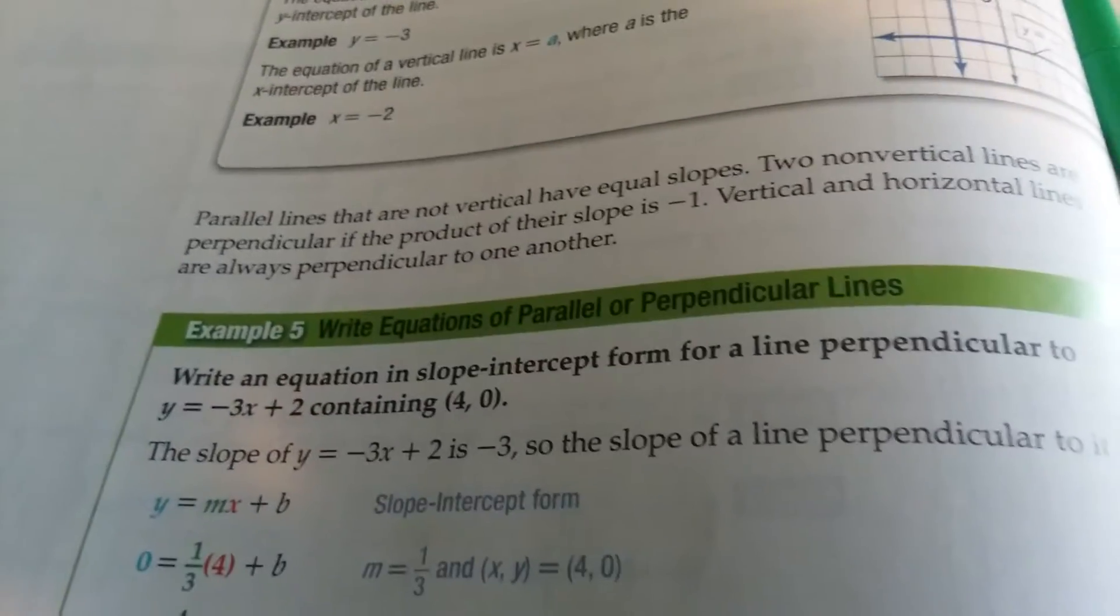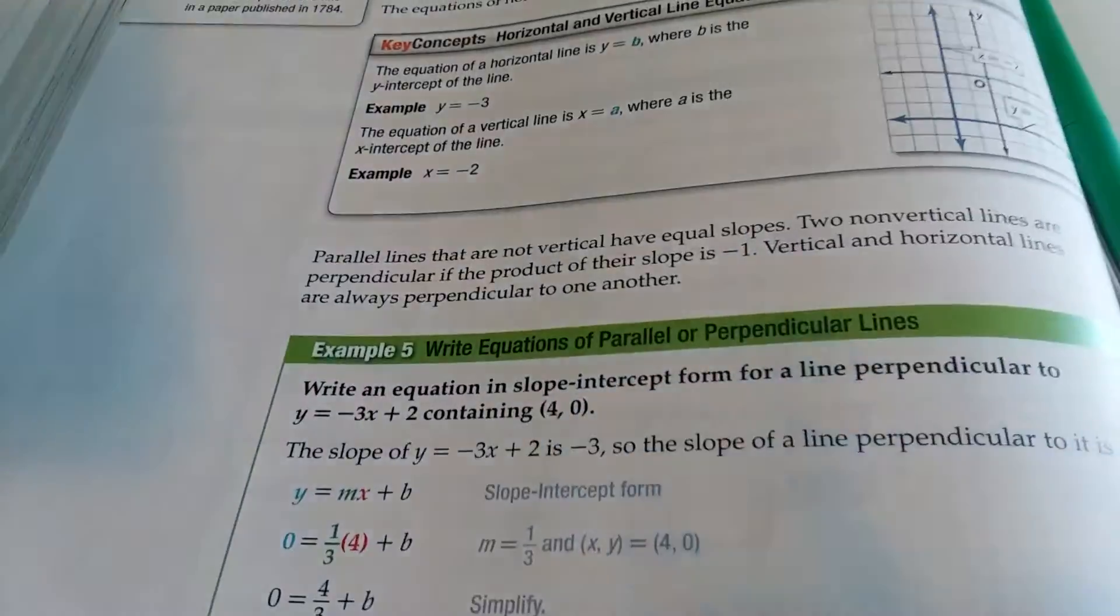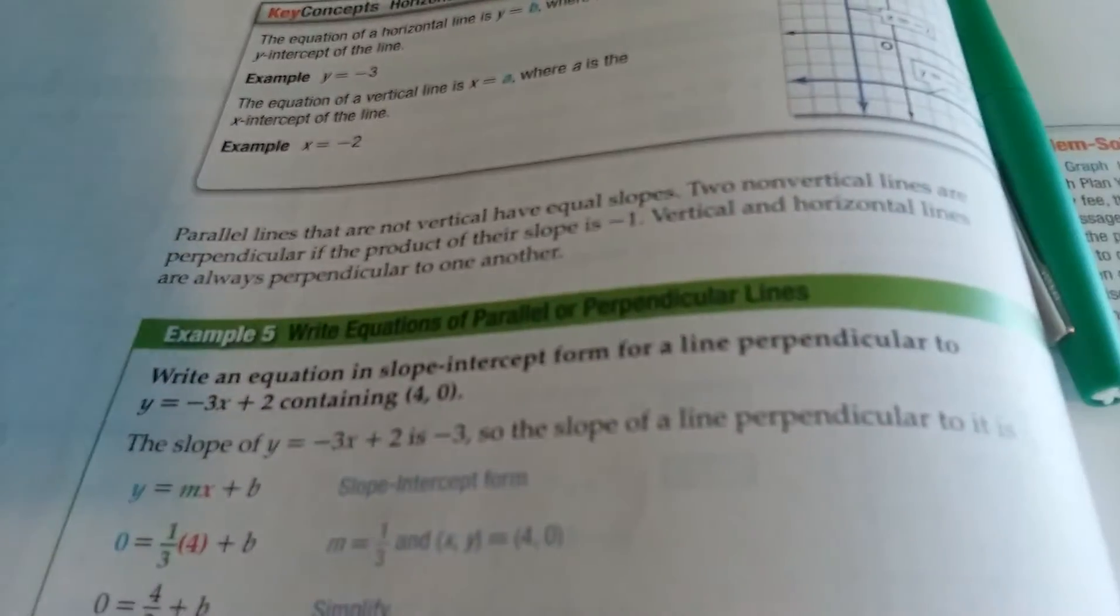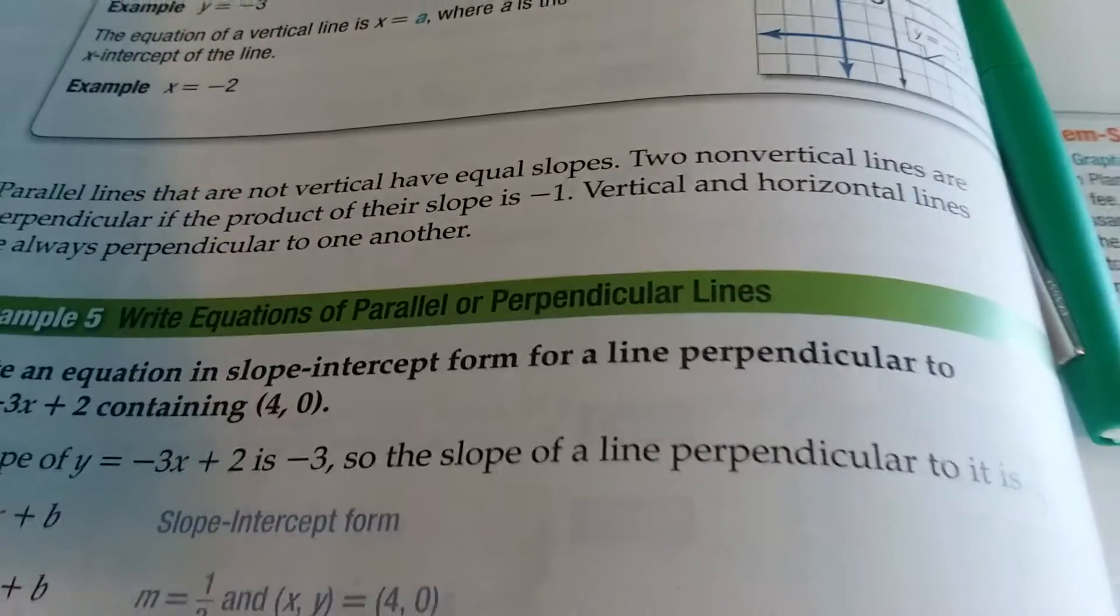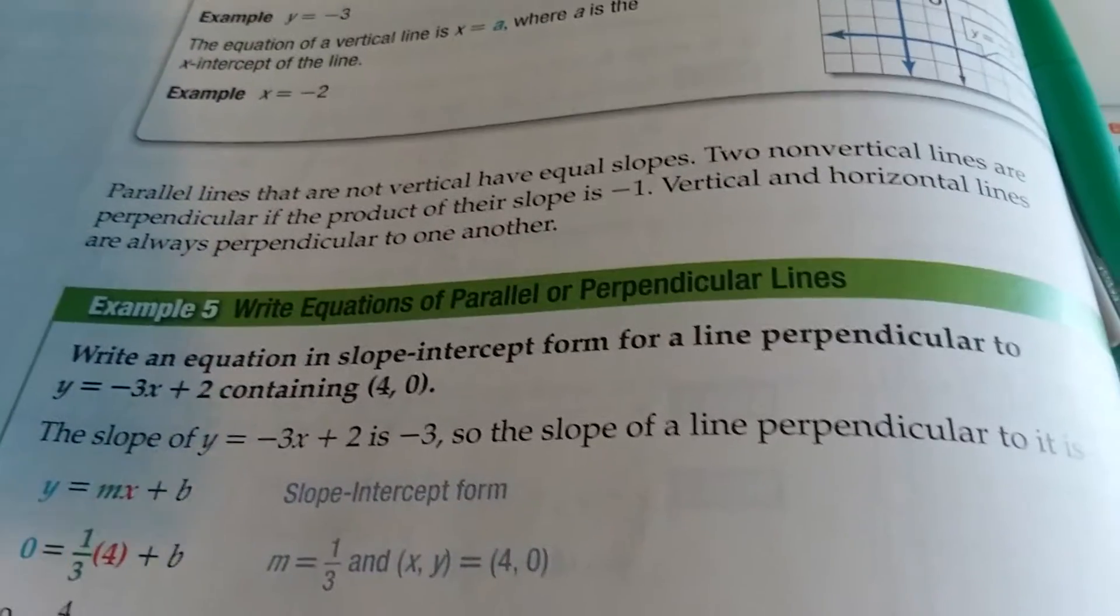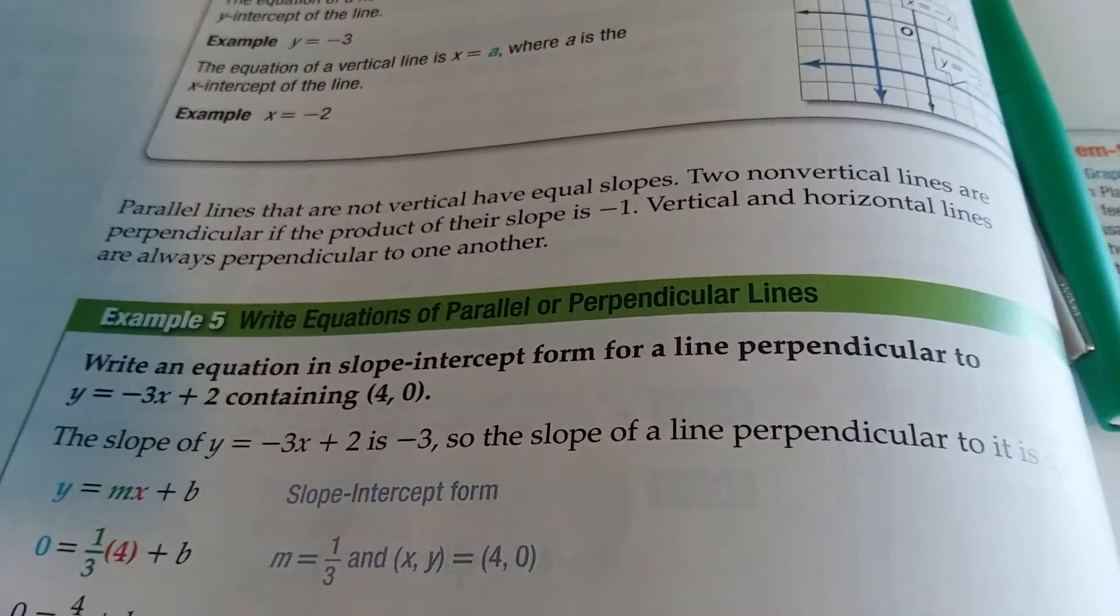Hello everyone, we're on example 5 on page 200 here. Write an equation in slope-intercept form for a perpendicular to y equals negative 3x containing (4, 0).